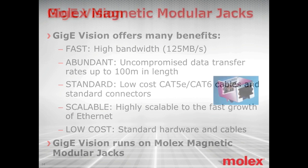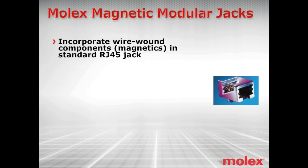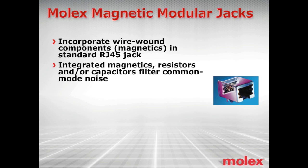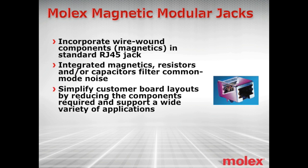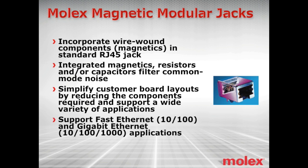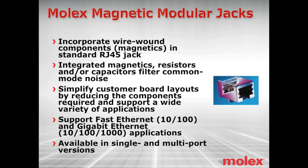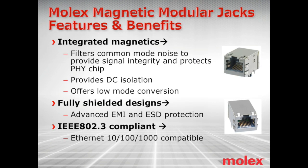Molex magnetic modular jacks incorporate wire-wound components in standard RJ45 jacks. Integrated magnetics, resistors, and capacitors filter common mode noise, simplify customer board layouts by reducing the components required, and support a wide variety of applications. They support Fast Ethernet and Gigabit Ethernet applications, and are available in single and multi-port versions. The integrated magnetics filter out common mode noise to provide signal integrity and protect the PHY chip, provide DC isolation, and offer low-mode conversions.